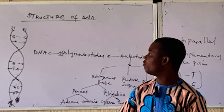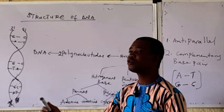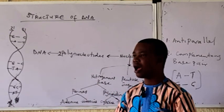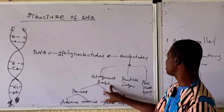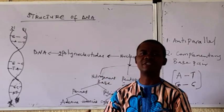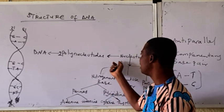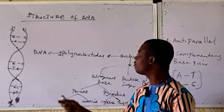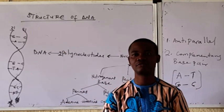Let's do a quick recap of DNA structure. DNA is double-stranded, and each strand is known as a polynucleotide. When we break down polynucleotide, we have nucleotides. The nucleotide is made up of a nitrogenous base, a pentose sugar, and a phosphate group. So the building block of DNA is the nucleotide. When we have many nucleotides, we have a polynucleotide. And when polynucleotides come together, we have DNA.